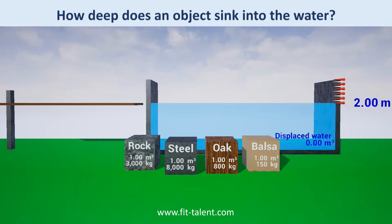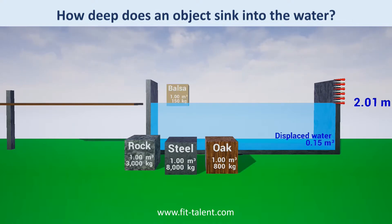Balsa wood has a density of 150 kilograms per cubic meter — a lot less than water — so it floats.